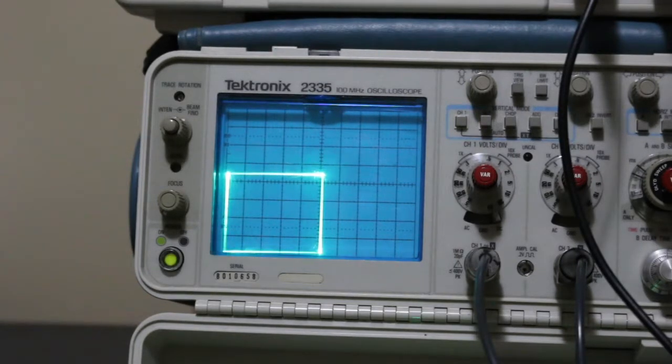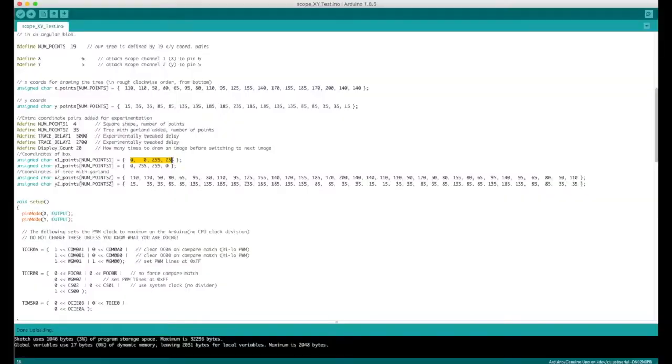So the way this works, to draw the box or anything else complicated, we just simply have four coordinates here. On X we have 0, 0, 255, 255, and on Y we have 0, 255, 255, 0.